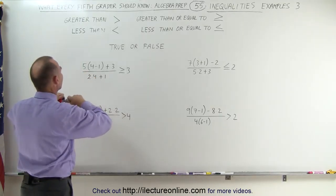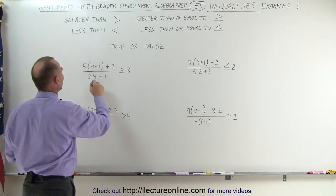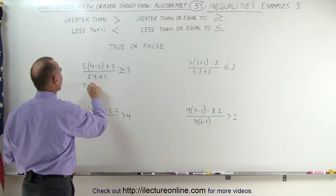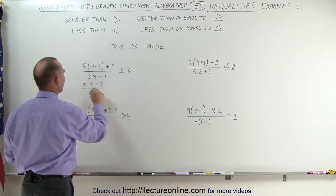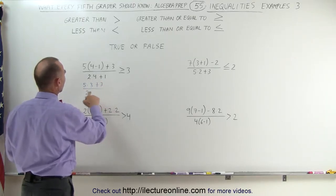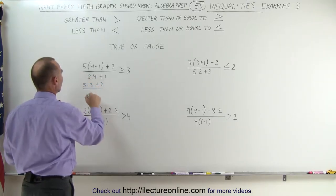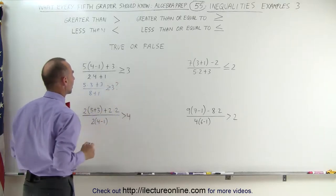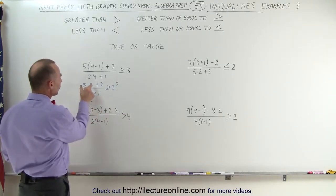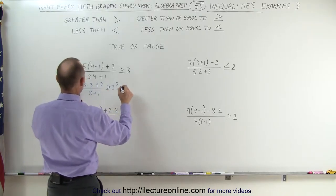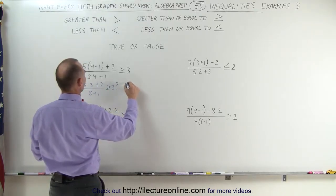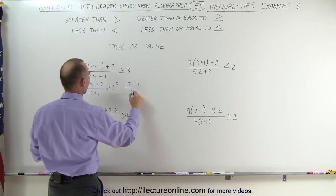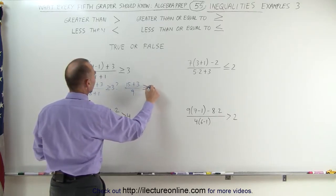Here we have the expression 5 times 4 minus 1. This becomes 5 times (4 minus 1 is 3) plus 3, divided by 2 times 4. We can multiply 2 times 4 to get 8, plus 1. Now we do the multiplication: 5 times 3 equals 15, plus 3, divided by 8 plus 1 which is 9. Is that greater than or equal to 3?